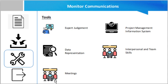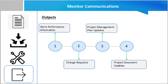The outputs for this process are: work performance information, which includes how project communication is performing by comparing the communication operations that were implemented compared to those that were planned. Change requests — the monitor communication process often results in the need for adjustment, action, and intervention on communication activities defined in the communication management plan.